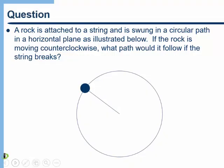Let's start out with a conceptual question to help us understand where the Law of Inertia comes from. A rock is attached to a string and is swung in a circular path in a horizontal plane as illustrated below. If the rock is moving counterclockwise, what path would it follow if the string breaks?